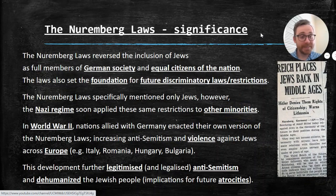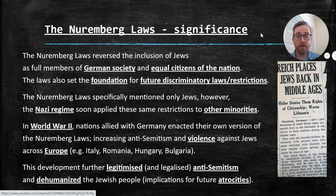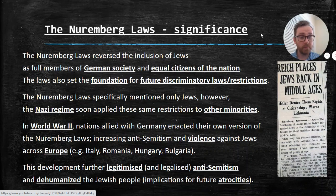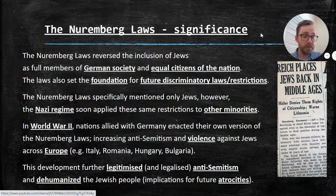Why are the Nuremberg Laws significant? The Nuremberg Laws essentially removed Jewish people from German society — they were no longer equal citizens of the nation. They were beneath everyone else, and that was set in law; not someone's opinion, but legally enforced by the courts and the government. The laws also set the foundation for future discriminatory laws and restrictions. It was the first in a set of laws that set the Nazi regime on a path towards genocide.